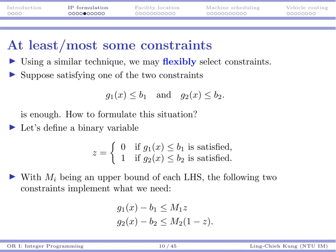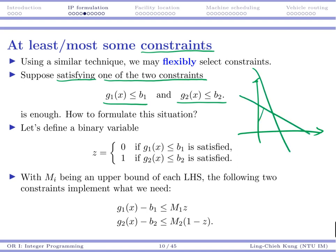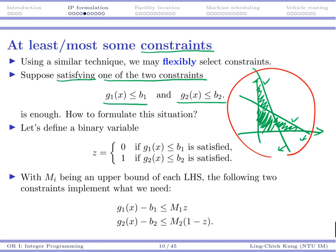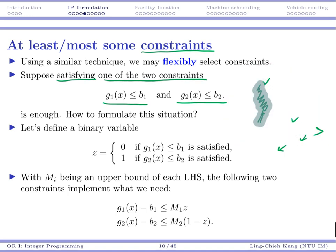We may also choose constraints in a flexible way. Suppose I want to satisfy one of two constraints — I need to choose one to be satisfied; I don't need to satisfy both, just at least one. This is like a union, compared to intersection where both must be satisfied. When we require both constraints, that's an intersection. This union case is not something a linear program can do, which is why we need binary variables.